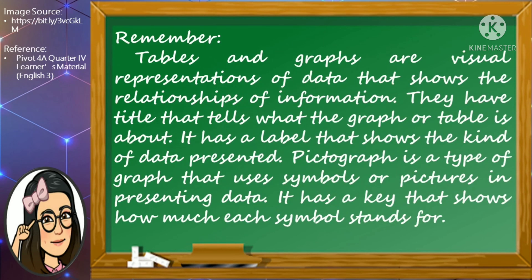To end our discussion for today, remember that tables and graphs are visual representations of data that show the relationships of information. They have a title that tells what the graph or table is about, and a label that shows the kind of data presented. A pictograph is a type of graph that uses symbols or pictures in presenting data, and has a key that shows how much each symbol stands for. I hope you understood our lesson for today and enjoyed watching and listening. See you in our next class. Bye!